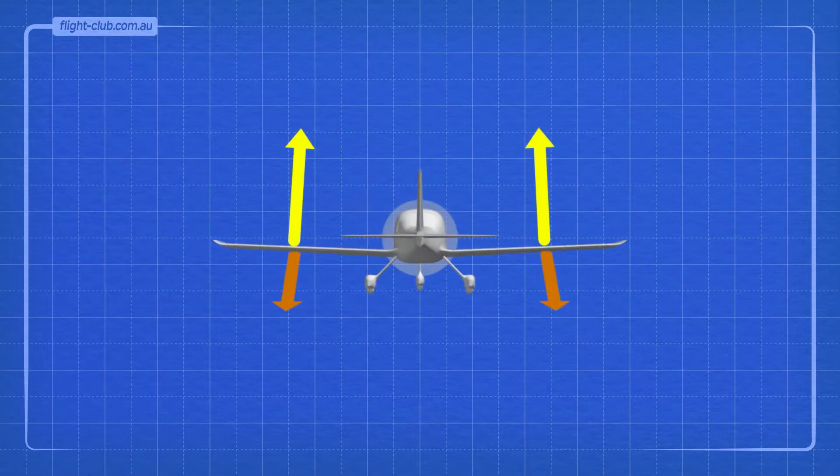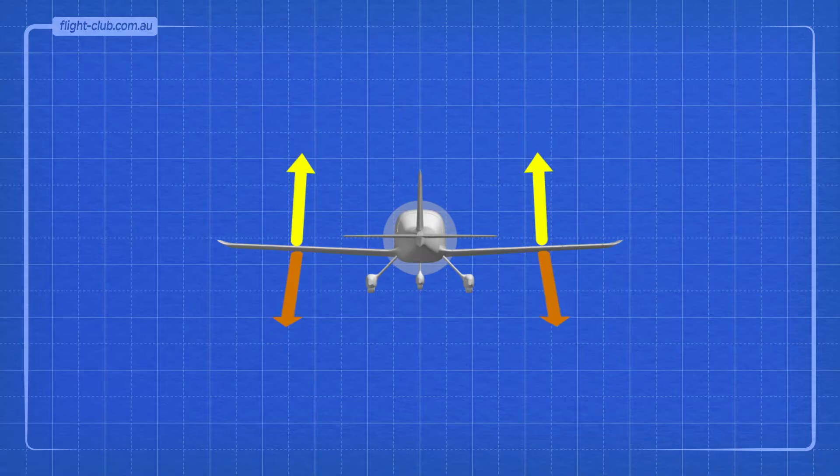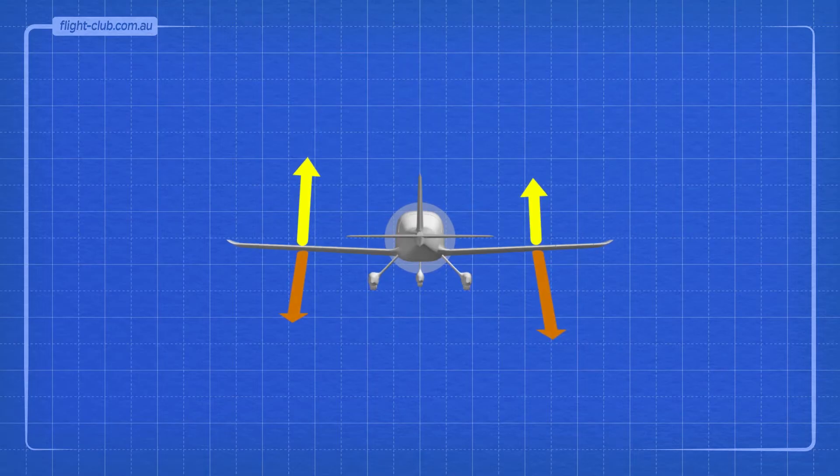It's important to note that both wings are stalled in a spin, but one wing is stalled more deeply than the other. In this example, it's the right wing.